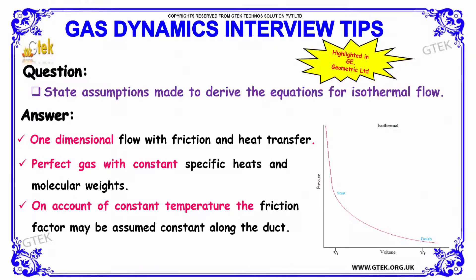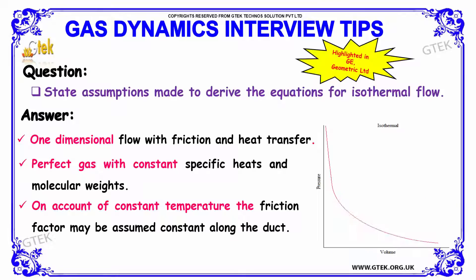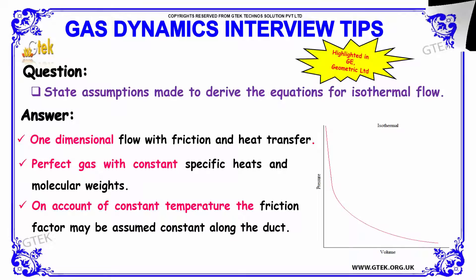Next question: state assumptions made to derive the equations for isothermal flow. The assumptions are as follows: first, one-dimensional flow with friction and heat transfer; second, a perfect gas with constant specific heat and molecular weight; and third, on account of constant temperature, the friction factor may be assumed constant along the duct.